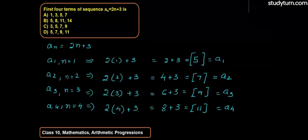Now, all the four terms we have found out. So our correct option will be D option, that is 5, 7, 9 and 11. I hope the answer is clear. Thank you for watching. Kindly subscribe to our YouTube channel.